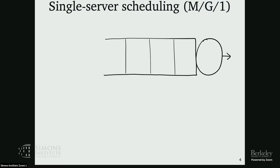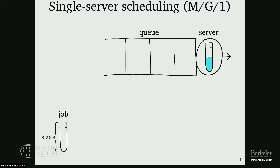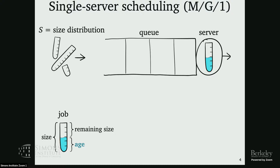This is a single server queue. We have a server that can serve jobs arriving over time. Jobs waiting for service will be in the queue. A job is going to be a test tube — its height is its size, that's how long it needs to be served for. We represent service as filling the test tube with water. We can talk about the progress made so far (its age) and the remaining work (its remaining size). Jobs arrive over time, and each job size is independently drawn from some distribution S.